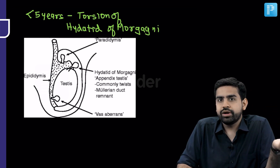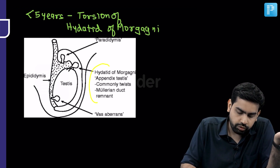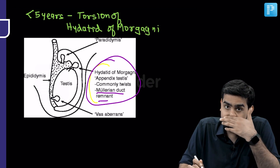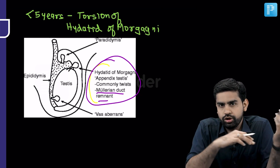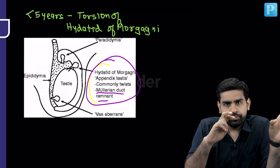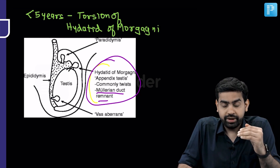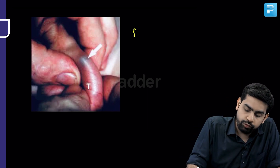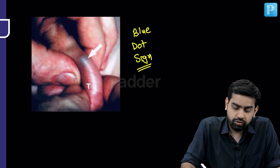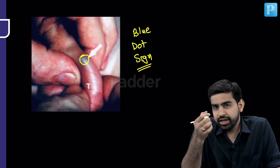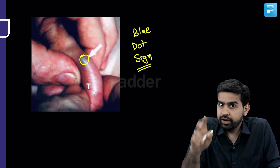Now, torsion of hydatid of Morgagni. There is something called the appendix of the testes — a remnant of the Müllerian duct. It can get twisted, causing testicular pain. On physical examination, you will find a blue dot sign — the skin is intact but you can appreciate a blue dot just beneath it, which is the necrosed hydatid of Morgagni. This blue dot sign is characteristic of torsion of hydatid of Morgagni.